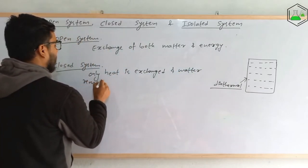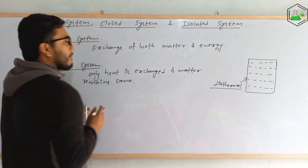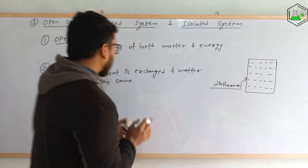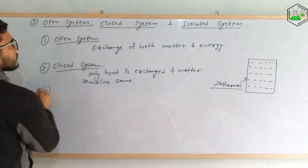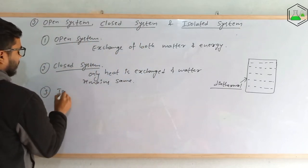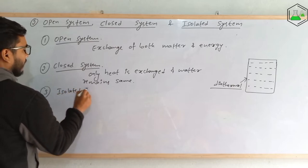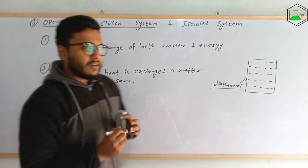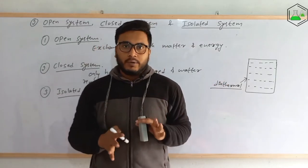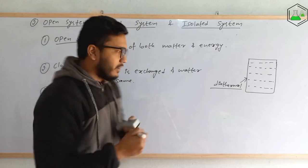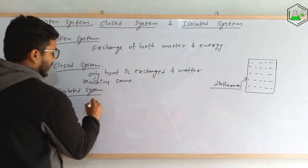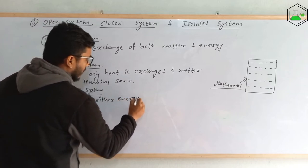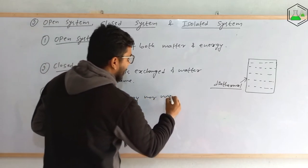That type of system is called a closed system — only heat is exchanged and matter remains the same; matter is not exchanged between the system and surrounding. The last one is isolated system. It is clear from the word that it will not exchange anything with the surrounding — neither energy nor matter.